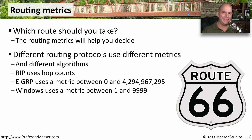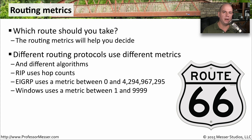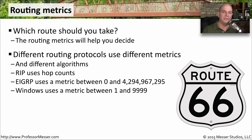There are many different ways to calculate a routing metric, and different routing protocols use different methods, because different routing protocols might take different things into account. Routing Information Protocol, for instance, uses hop counts — that's the only determination it makes to set a metric for what the best route might be. EIGRP can use a metric between 0 and 4,294,967,295, giving it a very wide range as a granular dynamic routing protocol.